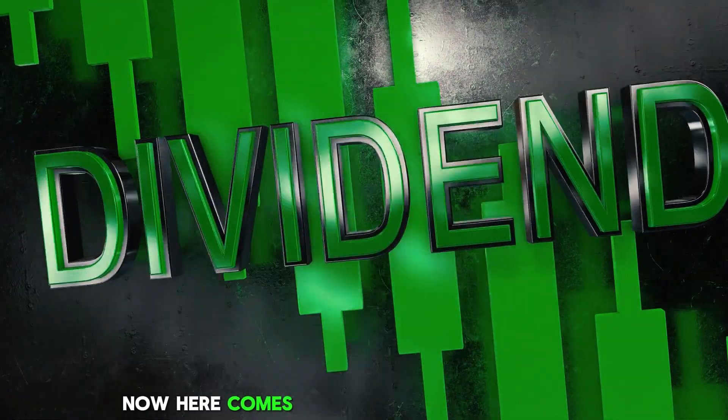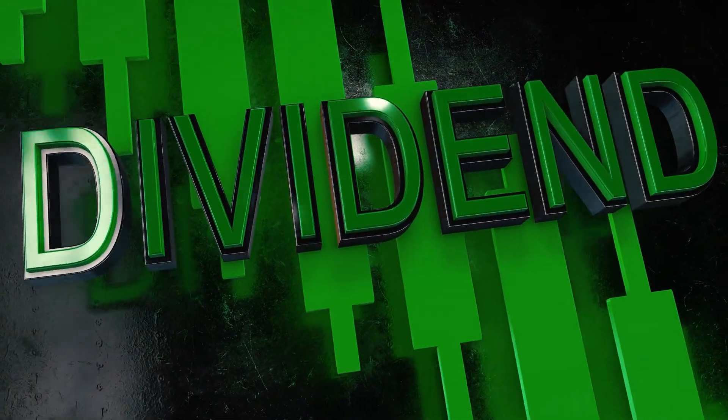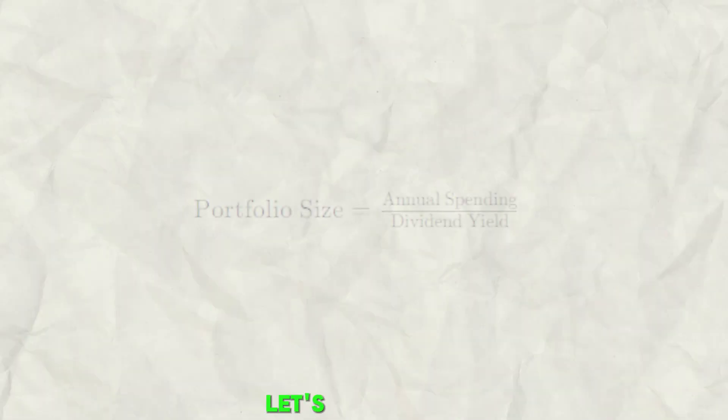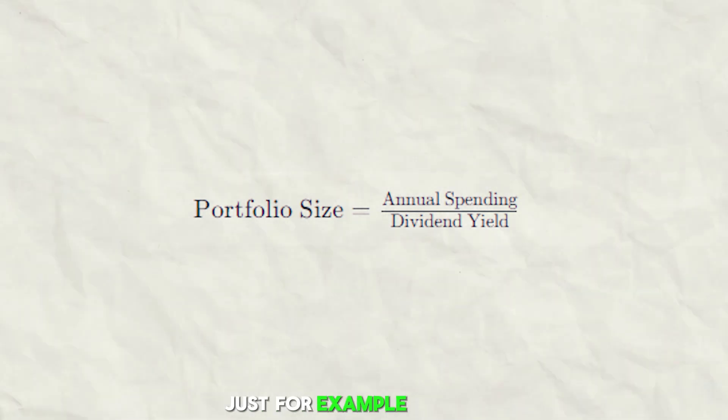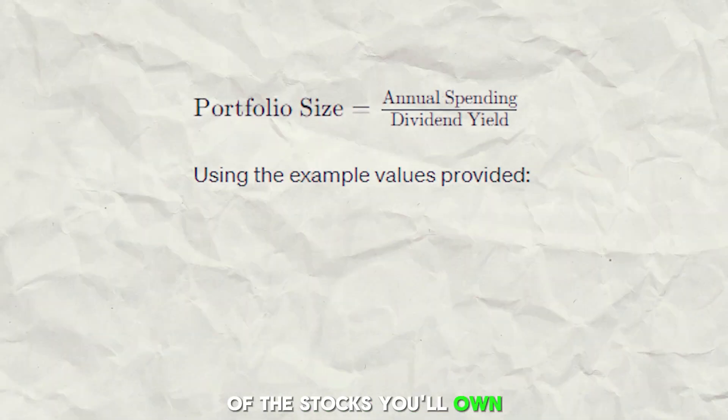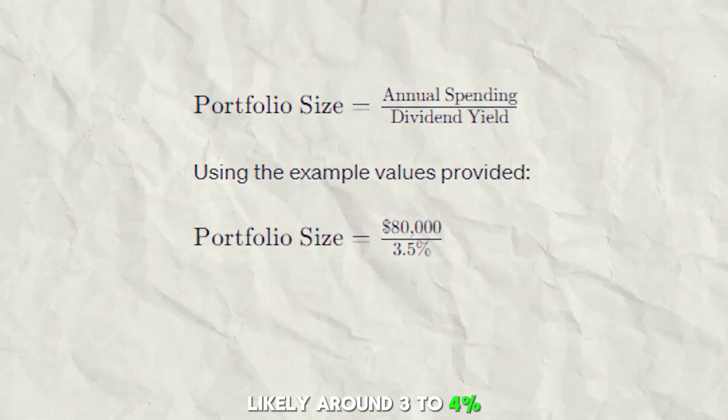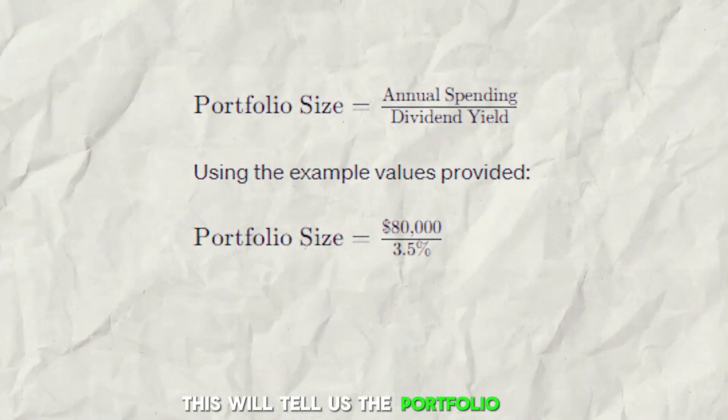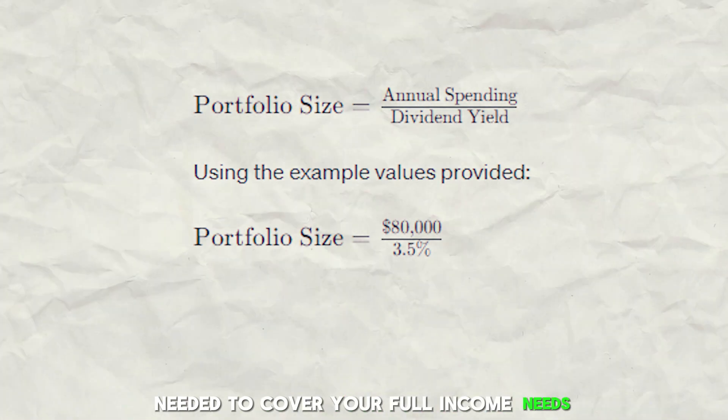Now, here comes our trusted dividend formula. Take your estimated annual spending, let's say $80,000 just for example purposes, and divide it by the dividend yield of the stocks you'll own, likely around 3-4%. This will tell us the portfolio size needed to cover your full income needs.